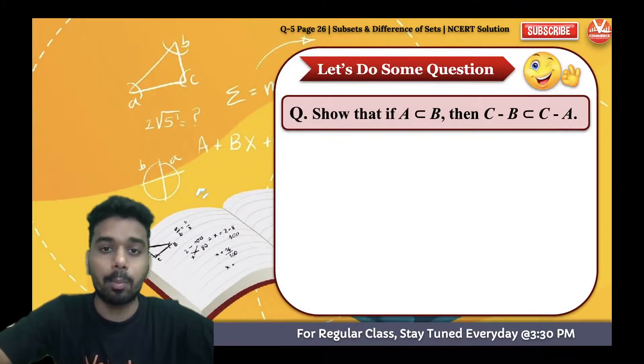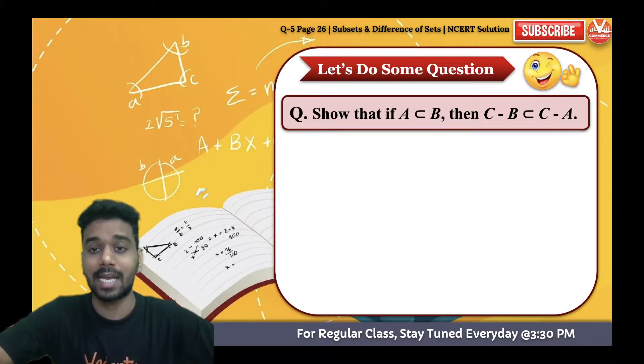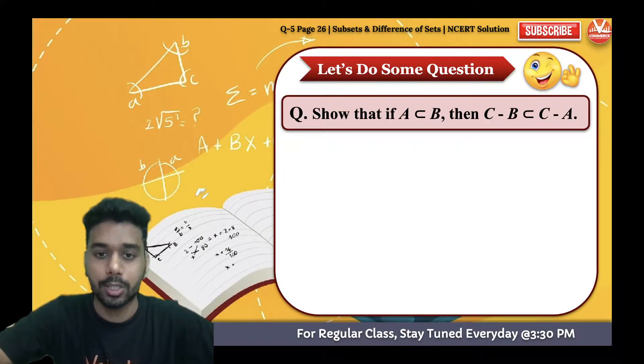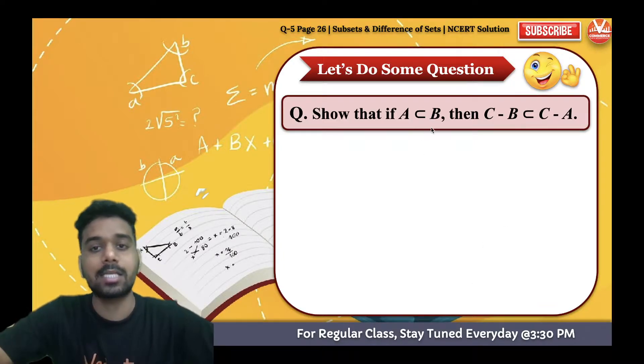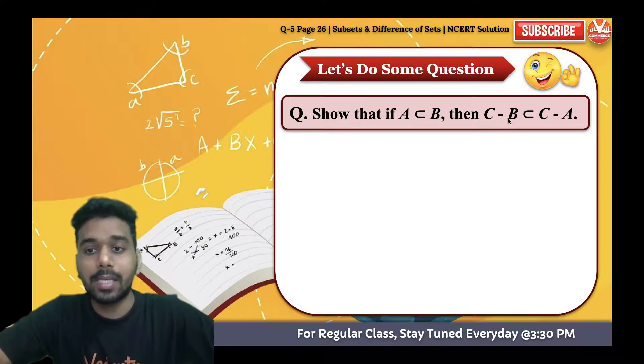Let's start question number five from chapter number one, page number 26, subsets and the difference of sets, basically the operation of sets. The question is: show that if A is a subset of B, then C minus B is a subset of C minus A.